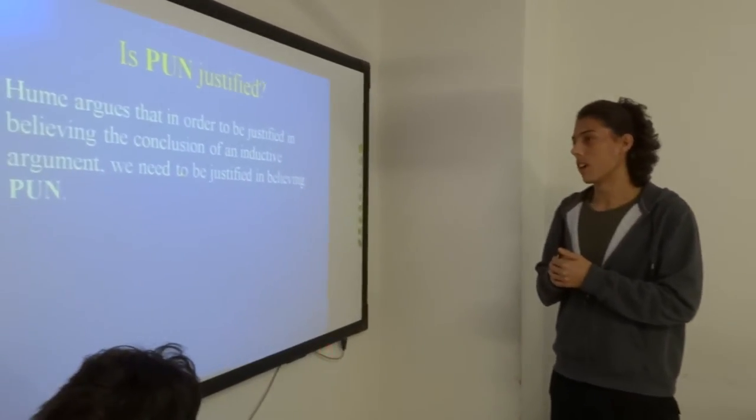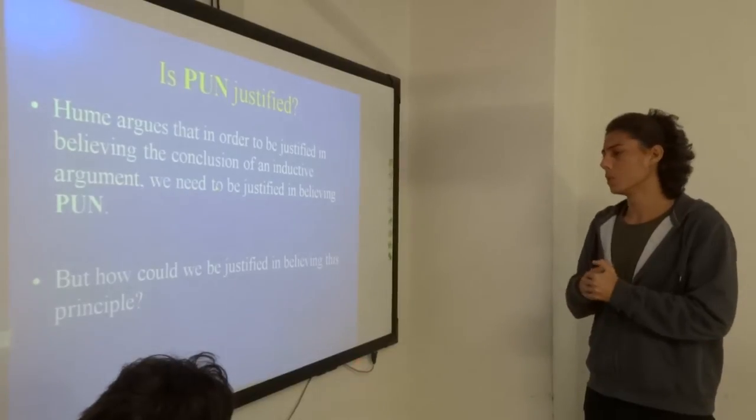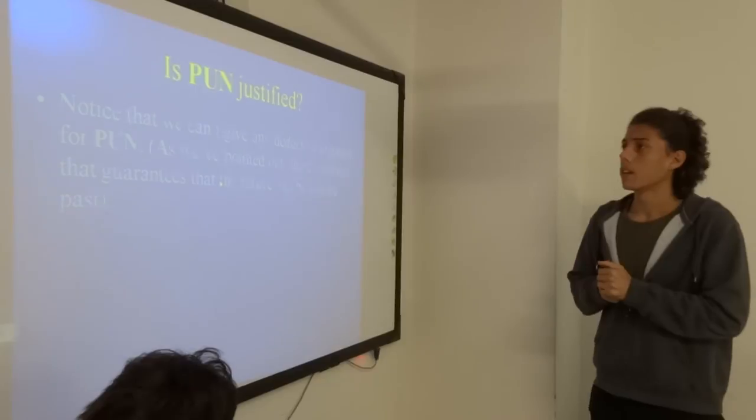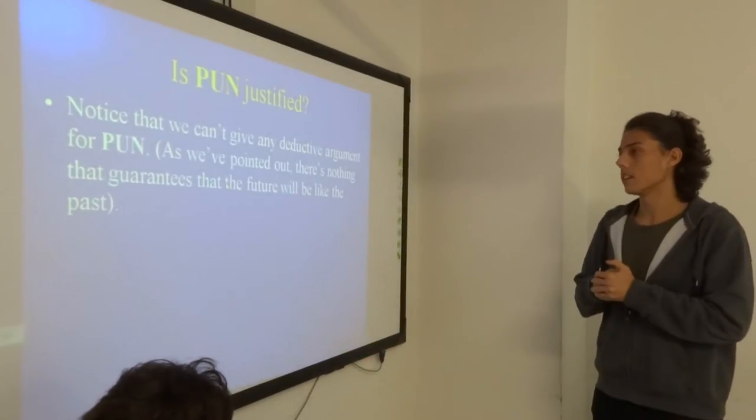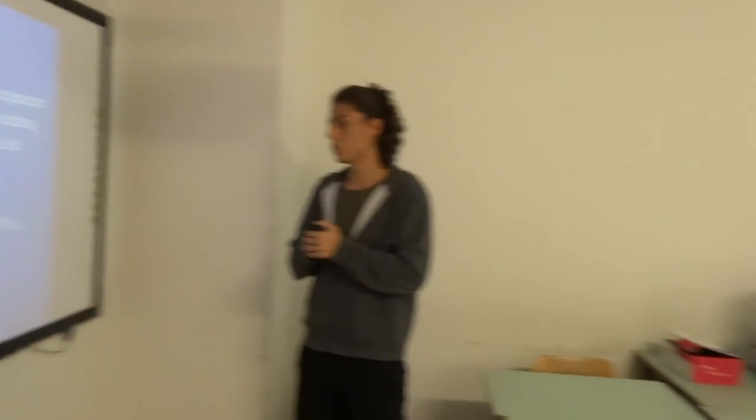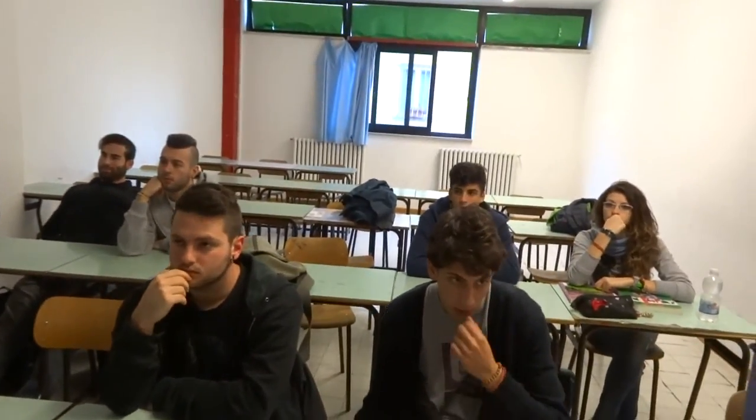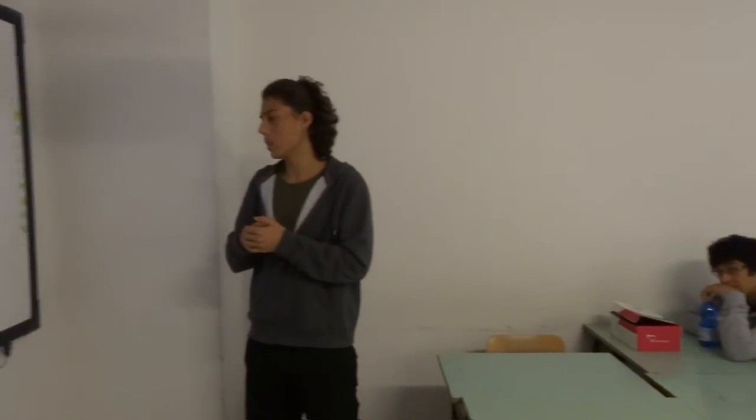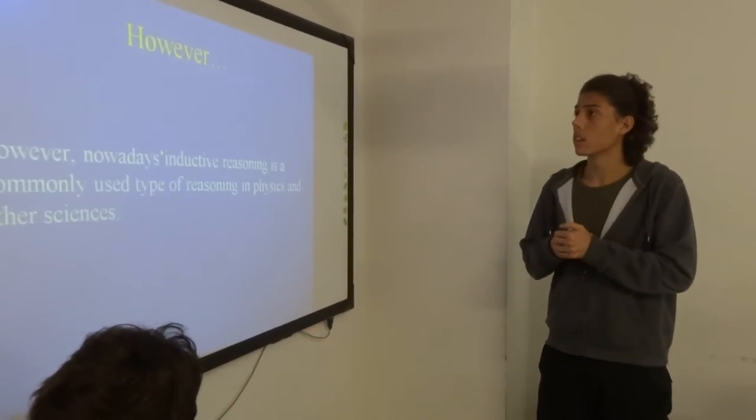Is PUN justified? Hume argues that in order to be justified in believing the conclusion of an inductive argument, we need to be justified in believing PUN. But how could we be justified in believing this principle? Notice that we can't give any deductive argument for PUN. There's nothing that guarantees that the future will be like the past. So it seems the only way to show that PUN is justified is to give an inductive argument. Circularity. But we can't give a good inductive argument for PUN because all inductive arguments rely on PUN. Hume's conclusion is that there is no way to justify PUN, and thus we can never be justified in believing anything on the basis of induction.